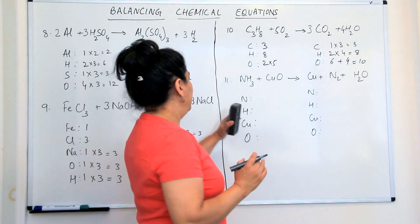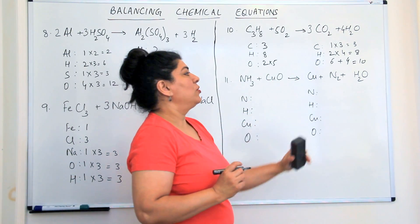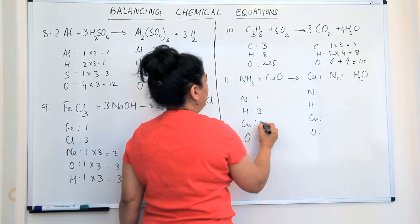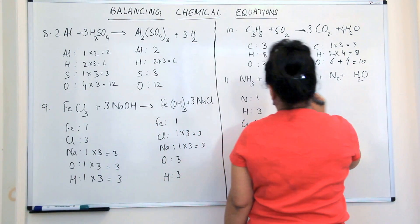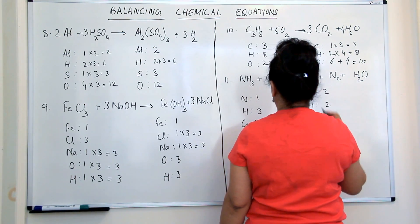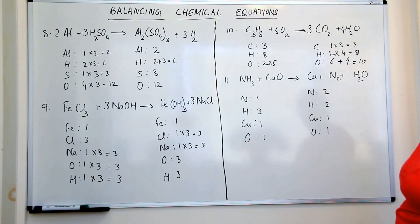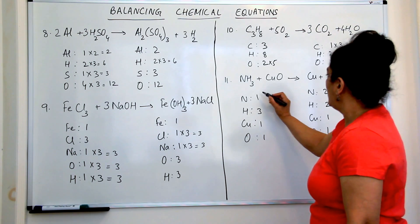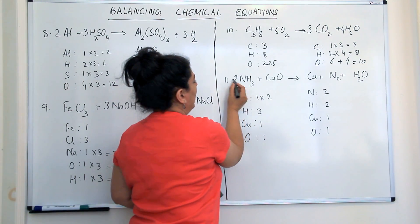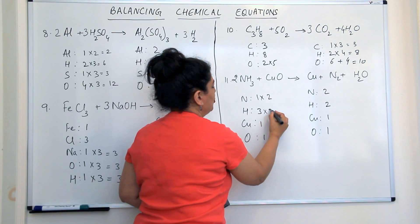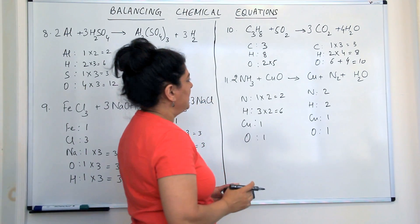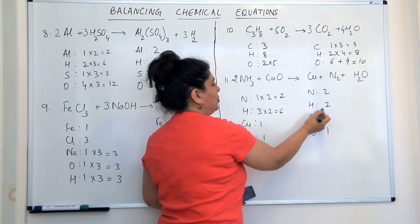The last problem. We have ammonia, copper oxide, giving us copper, nitrogen, and water. Reactant side: nitrogen is one, hydrogen is three, copper is one, oxygen is one. On the product side: nitrogen is two, hydrogen is two, copper is one, and oxygen is also one. There is one nitrogen on the reactant side and two on the product side. So if I multiply ammonia by two, nitrogen would be balanced. The moment I multiply by two, hydrogen was three, and three times two becomes six. Nitrogens are balanced, but now I have six hydrogens on the reactant side, and hydrogen is not balanced.